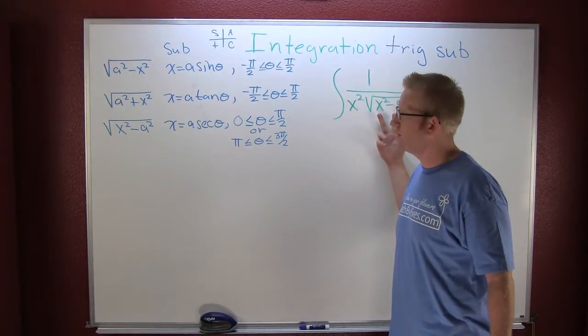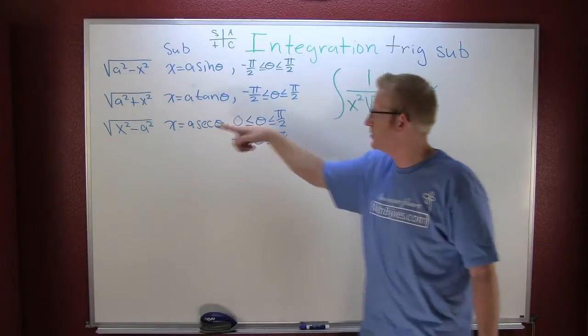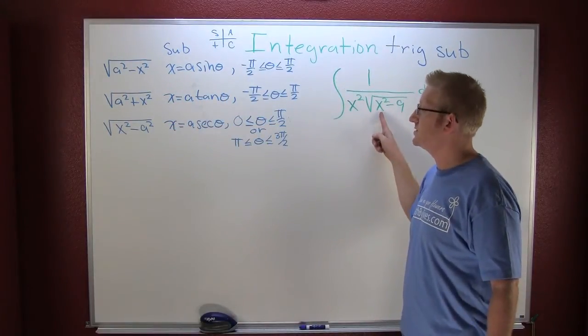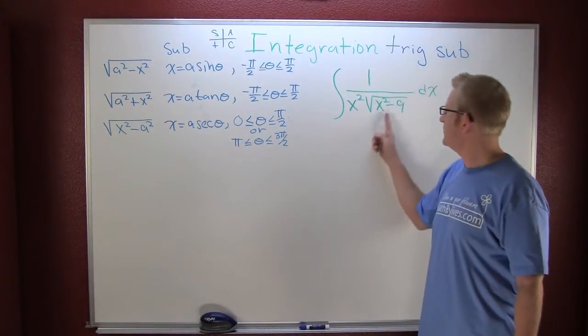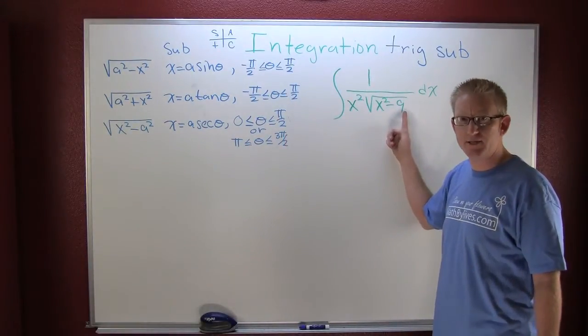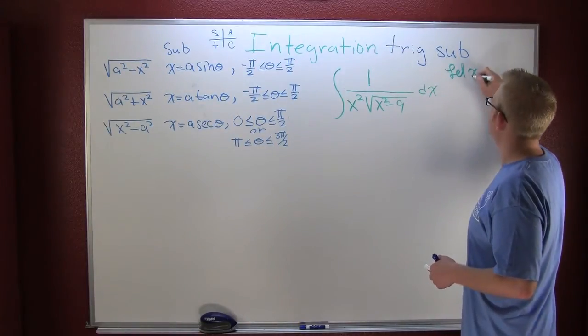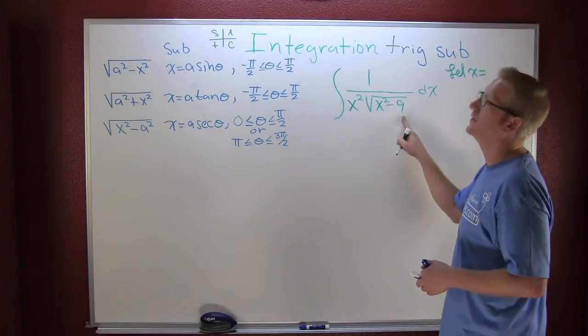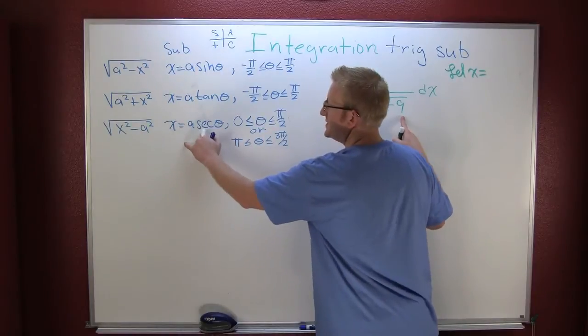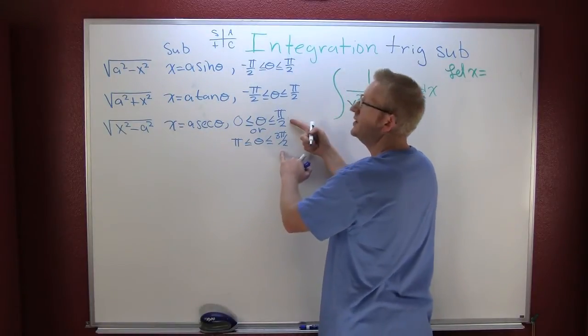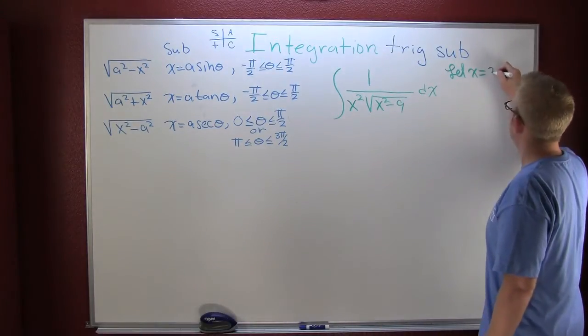I'm talking about trig. We're looking for one of these three cases: which one do we have, the top one, the middle one, or the bottom one? The x is first, so we got that bottom one. So here my a is going to be whatever's being squared, that's 3 squared. So here I want to let x be 3 times secant theta. I have to have a restriction, I'll talk about the restriction in a second.